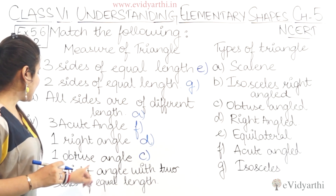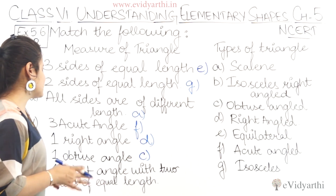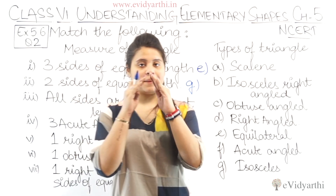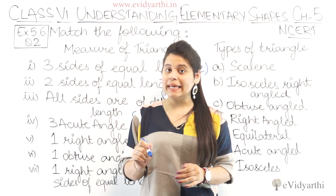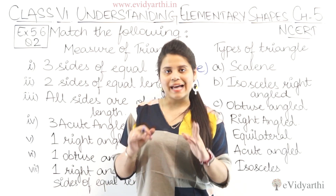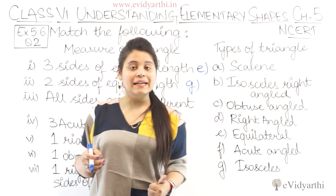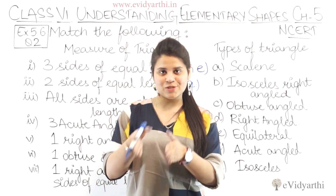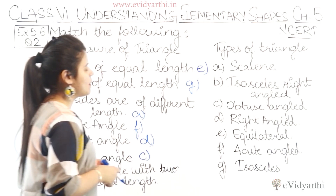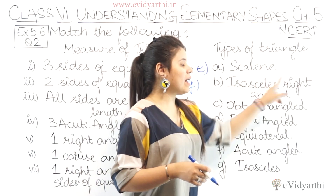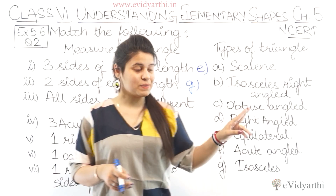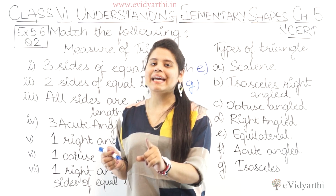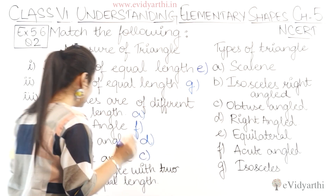Then we have one right angle with two sides of equal length. There is one right angle and two equal sides — meaning the triangle has one angle of 90 degrees and two equal sides. Since the angle is 90 degrees, it is a right angle triangle. Since two sides are equal, it is also an isosceles triangle. So here we have an isosceles right angle triangle — it is isosceles and has a right angle. That is the B part.